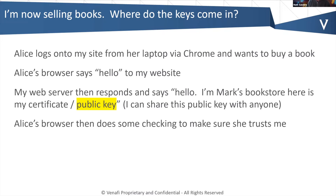When I send this over to Alice, her browser is then going to do some checking and it's going to say, is this really marksbooks.com? It's also going to look at the certificate and say, hey, this thing was issued by DigiCert — is this a real certificate, is this certificate still valid, is this a real website? There's a lot of validation that goes on, and her browser says yeah, this is good, Alice you should proceed. Or if there's something wrong, her browser is going to say nope, Alice, don't go there — this is not a good bookstore.